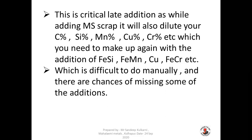This is a critical aspect of late addition calculations: while adding MS scrap it will also dilute your carbon, silicon, manganese, copper, chromium, etc. percentages, which need to be made up again with additions of ferrosilicon, ferromanganese, copper or ferrochromium. This is difficult to do manually and there are chances of missing some additions while doing these manual calculations.